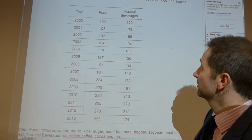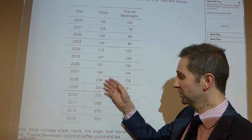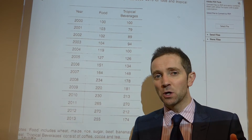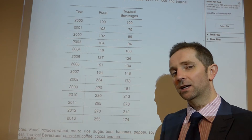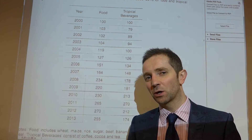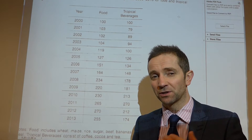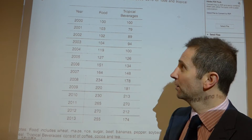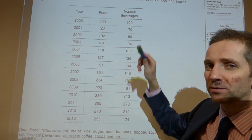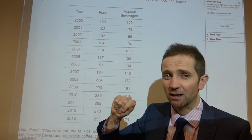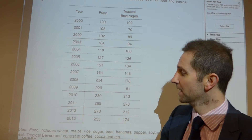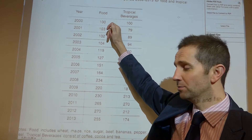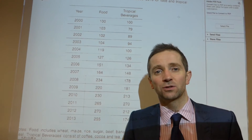First thing to note is that this is index numbers, so we're presented with a large number of index numbers. Do make sure that you know what an index number is and how to interpret it — if you don't, search for my previous video on index numbers. In this question, 2000 is the base year — you know that because the value is 100 — and so the prices are being expressed as a percentage change from 2000 through to 2013.